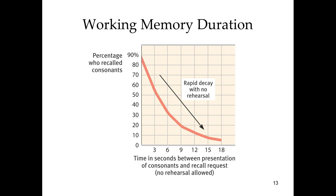Here's a graph displaying what those individuals experienced. With nonsense strings of letters and counting backwards by threes preventing rehearsal — when stopped after three seconds, they had about 60% recall. Double that to six seconds, and only 30% recall. Make them wait a whopping 18 seconds, and they can only remember less than 5% of the information. Working memory duration was largely determined by looking at how long the information could remain.